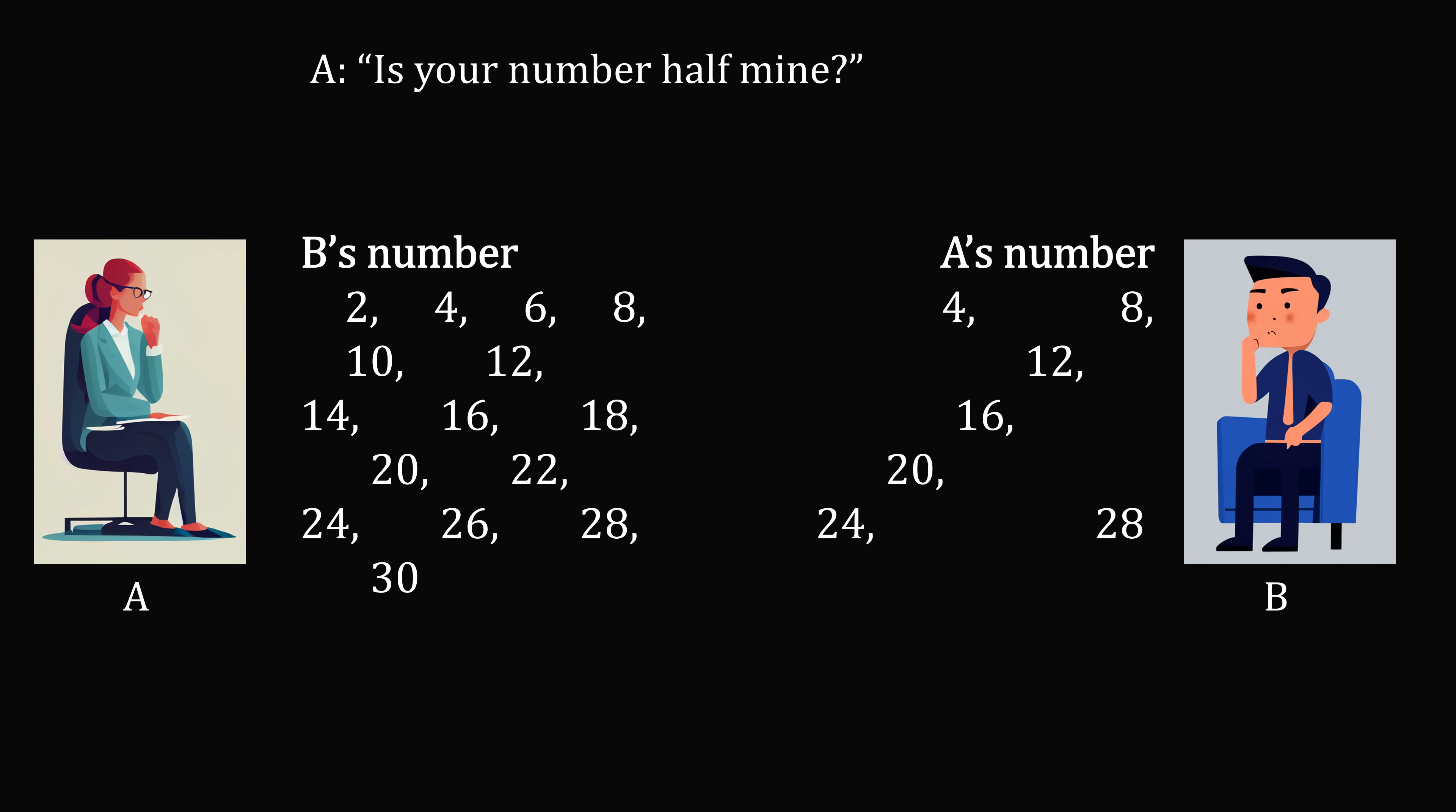A then asks, is your number half mine? B replies, I don't know. B knows that A's number has a minimum value of 4, a maximum value of 28, and it's a multiple of 4. In order that B replies, I don't know, it must be the case that B's number is between 2 and 14. So A can eliminate all other possibilities. We know the maximum can be 14. So A eliminates all the possibilities of numbers larger than 14 from B.